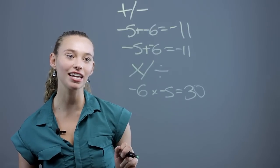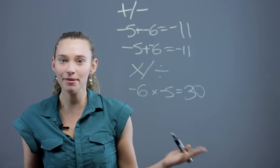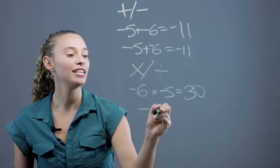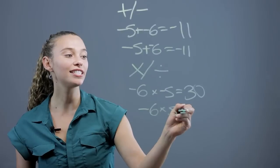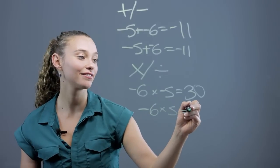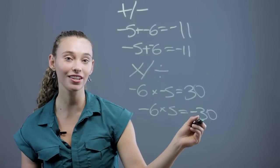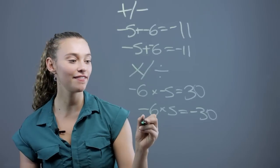But if you just have one negative, I don't have homework, that means you actually don't have homework. Negative 6 times 5, one negative, it's going to stay negative. Negative 30. Same with division.